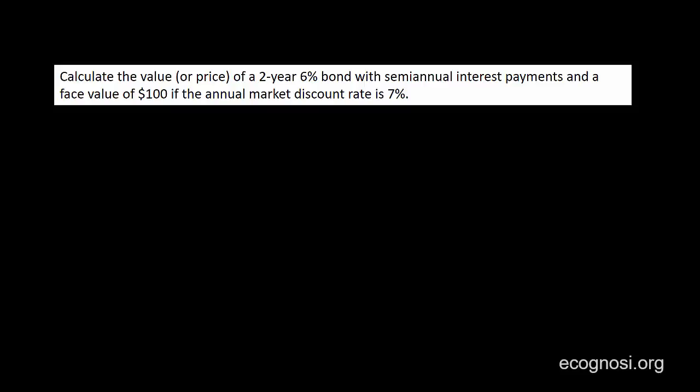Hello! Let's once again get our hands dirty with a bond valuation example. In this video, we'll deal with a semi-annual coupon bond. Let's go through our example: calculate the value or price of a 2-year bond with semi-annual interest payments and a face value of $100, if the annual market discount rate is 7%.